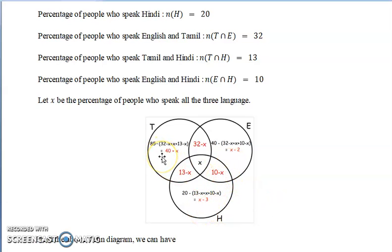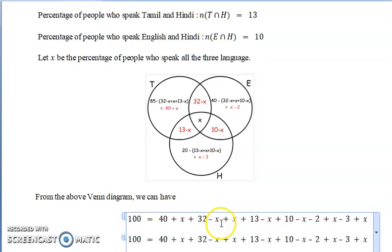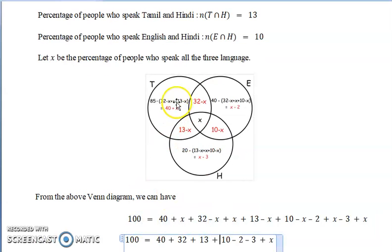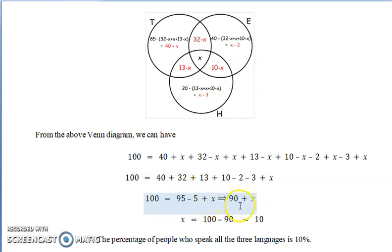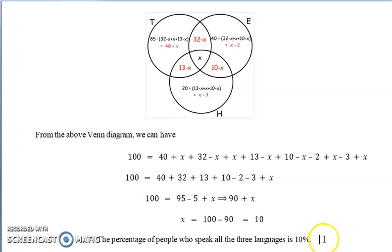Since they are asking for a percentage, the total is 100. Adding all the regions in the Venn diagram gives the right-hand side as 90+x. Setting this equal to 100 and solving gives x = 10. So the percentage of people who speak all three languages is 10%. This completes our topic on sets and its applications — types of sets, everything is finished. In the next class we are going to discuss functions and relations. Thank you.